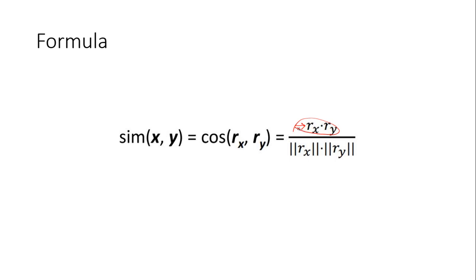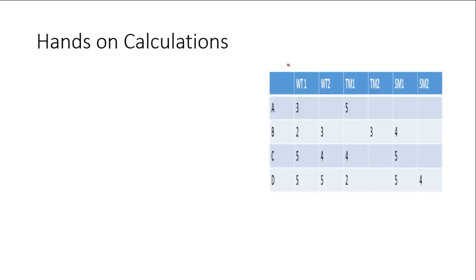So for calculating the denominator of the formula we will take norm of rating of each user which are under examination and then we multiply it. Let's take an example. Suppose we want to find the cosine similarity of user A and B.